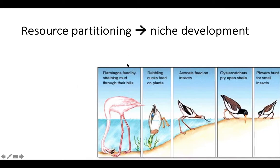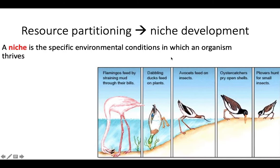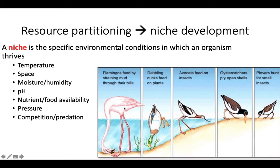Those unique adaptations come into play and lead to the development of what we call a species niche — or niche, however you want to say it. It's the specific conditions in which a species thrives, and it's going to be a little bit different for every single species. Look at this example — all these different birds that live along the shoreline have all partitioned their resources, specialized, and developed their own little niche. It's all interconnected: they live in different areas, they feed in different areas, they feed on different things, and that reduces competition. The things that are going to determine a species' niche are the availability of food, maybe the temperature, space, humidity, pH, pressure, and more. Different species are going to have different preferences and therefore different niches.